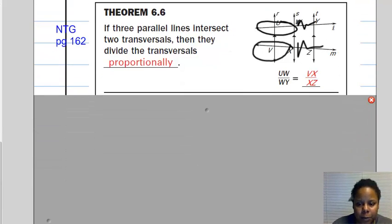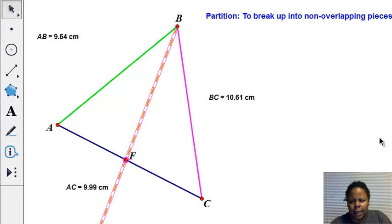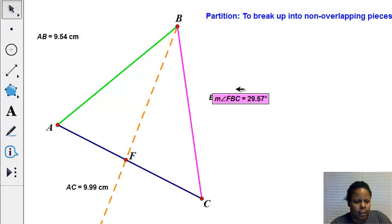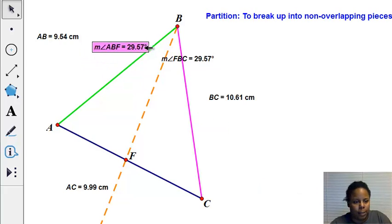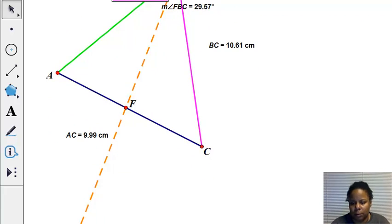Alright, in the last theorem, we're going to go back to a triangle. So here is our triangle, and I want to produce an angle bisector. Now I know it's an angle bisector because this angle, angle FBC, which is this one, is going to be congruent to this angle, which is angle ABF. So that means that FB is an angle bisector. But if you notice, FB breaks up the third side, AC, into two pieces. Well, let's see about the length of those two pieces.